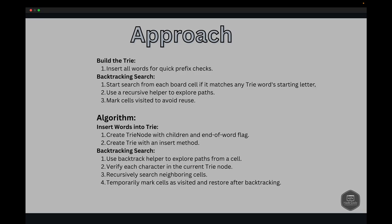The algorithm steps: first, insert words into the Trie by creating a TrieNode class with a dictionary of children and a boolean flag to indicate end of word, and a Trie class with an insert method. Next, create a helper function backtrack that explores all possible paths from a given cell. For each character we check if it exists in the current Trie node, then recursively search neighboring cells — up, down, left, right. After that we mark the current cell as visited by modifying the board temporarily and backtrack to restore its original state.